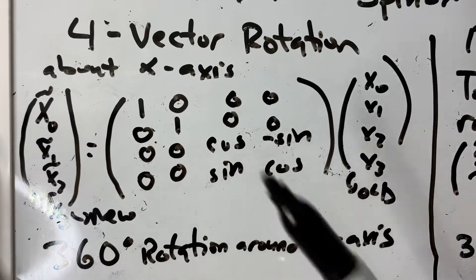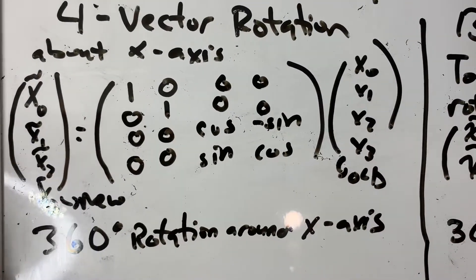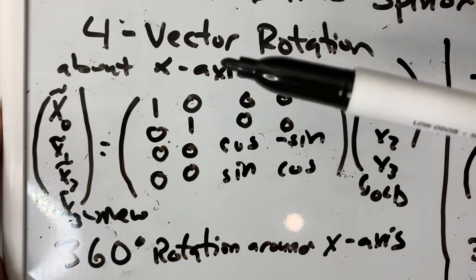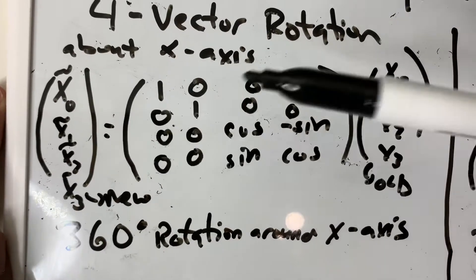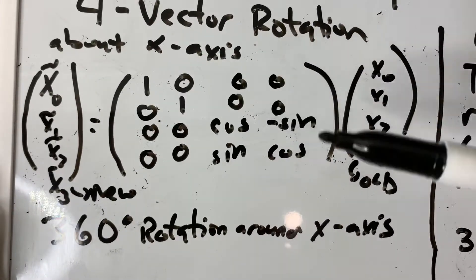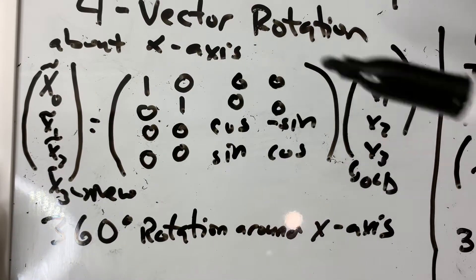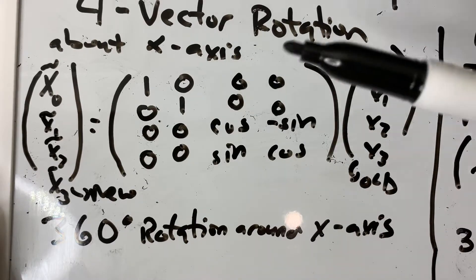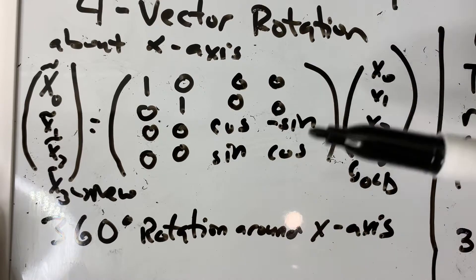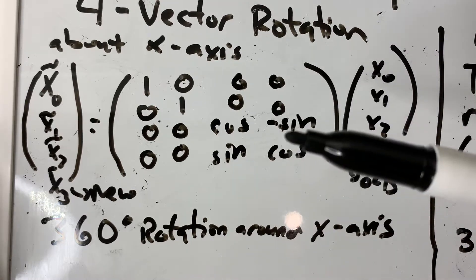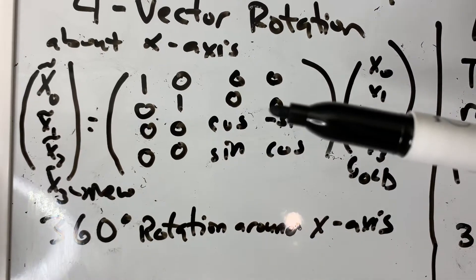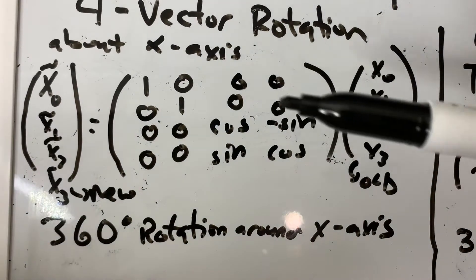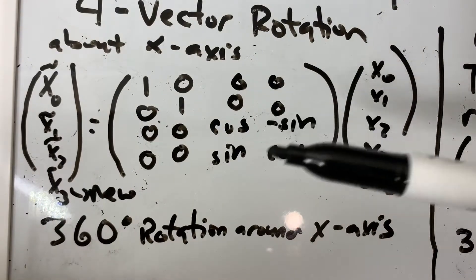Here I have the rotation matrix for some 4-vector about the x-axis. So I have these 4-vector components, and you would multiply the 4-vector components by the rotation matrix to rotate about the x-axis by some angle theta. I haven't actually written theta explicitly along the trigonometric functions because it's going to take up too much space, but basically there's an implied theta next to each one of these.